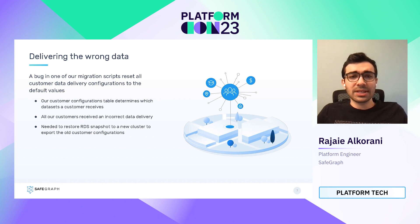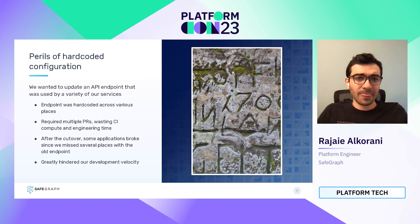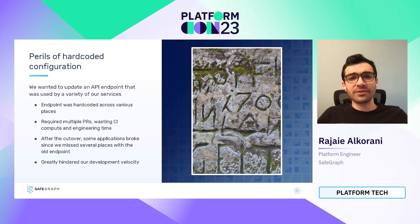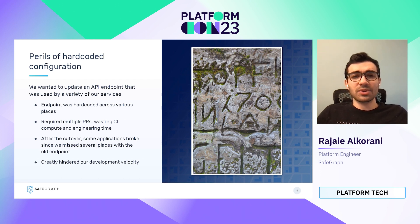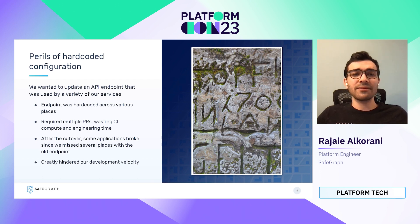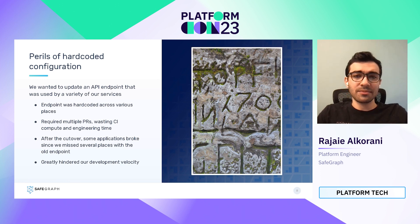We then had to deliver all the data to our customers again. In another situation, we wanted to update one of our API endpoints that was used by a variety of our services across different code bases. This endpoint was hard-coded everywhere, which meant we had to open multiple PRs and spend a significant engineering effort to roll out this change. Even after all this effort, we still ended up missing a few places where the old endpoint was being used, which caused a few applications to break when we deprecated the old endpoint. The pattern of hard-coded configurations made it difficult to roll out these types of changes and reduced our overall development velocity.